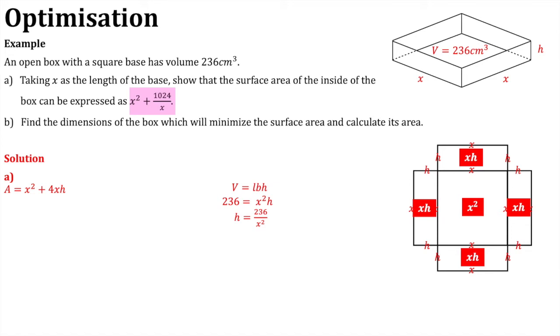What we can then do is we can take this back to our equation for the surface area. So, x squared plus 4x multiplied by h, but now h is 236 over x squared. Now, if we expand that, we get x squared plus 1024x over x squared. So, there's the 1024 appearing that we're looking for. We can see that x over x squared will simplify. It will just give us 1 over x there. So, we have now proven what the question asked us. The surface area is x squared plus 1024 over x as required.